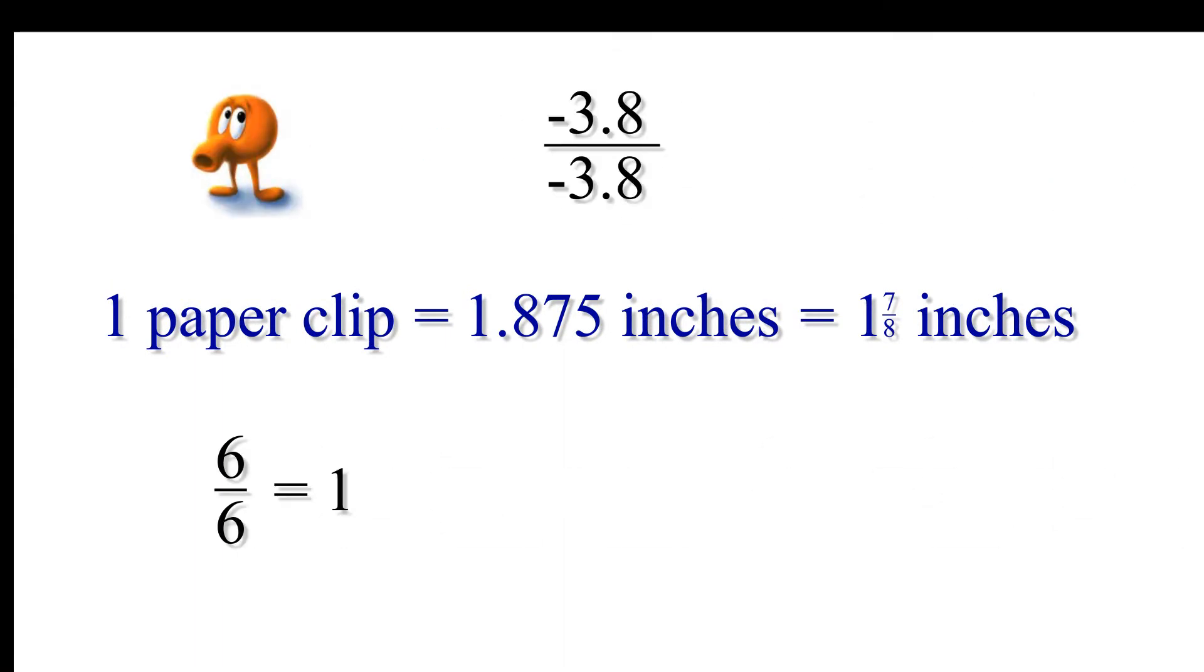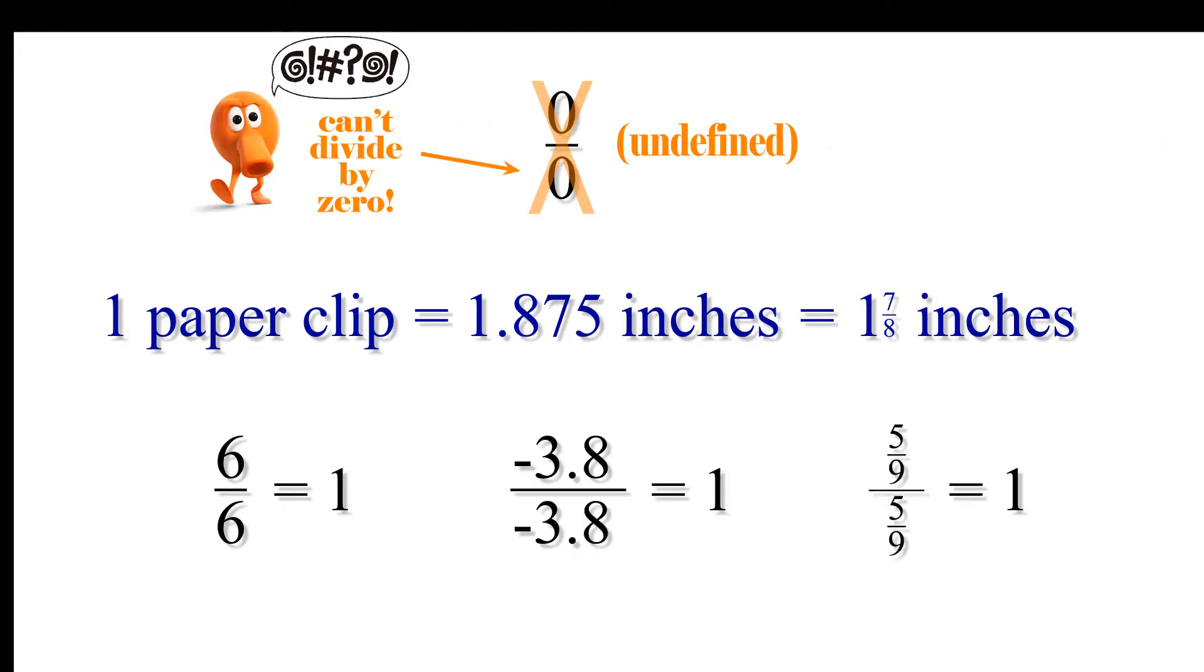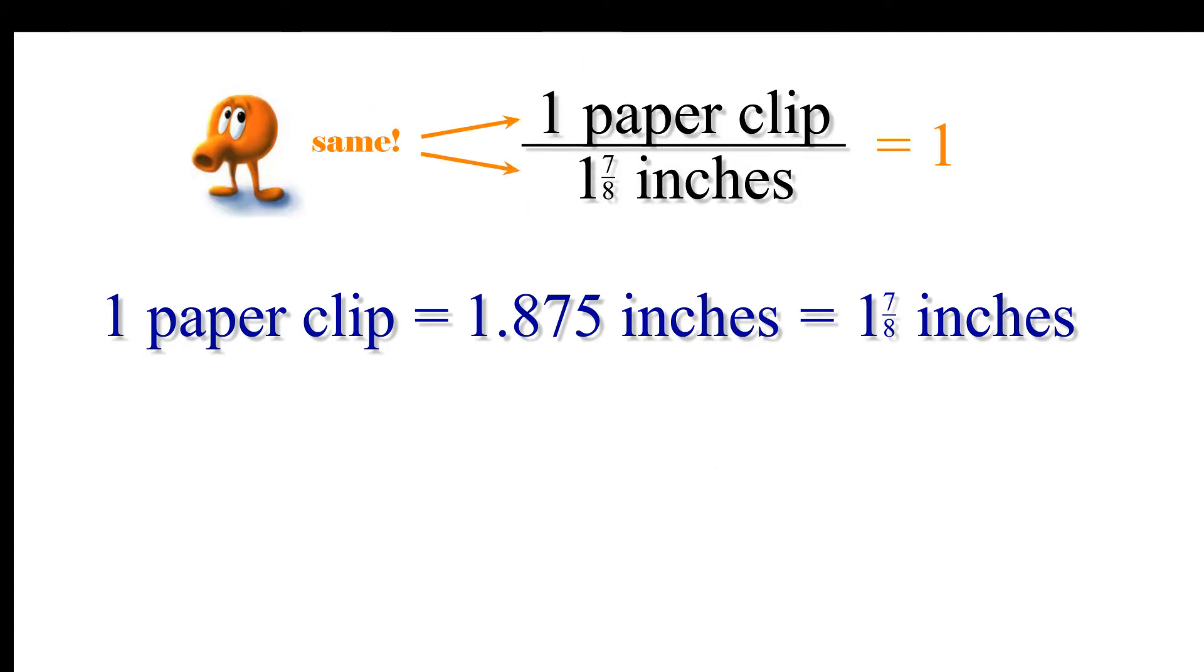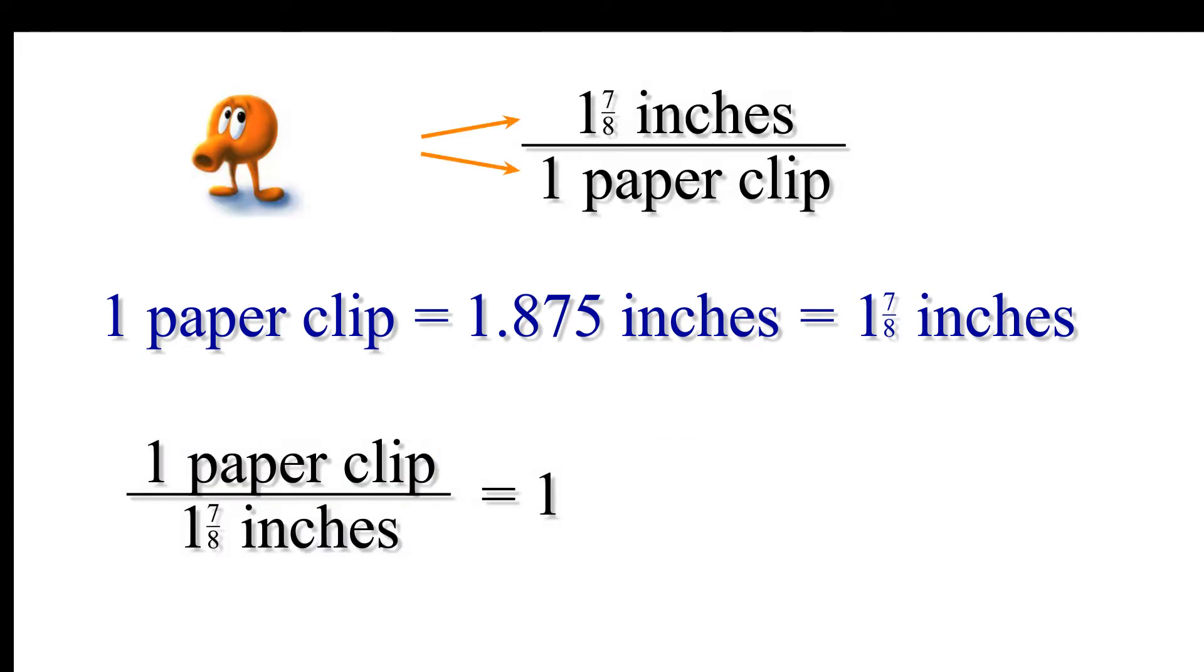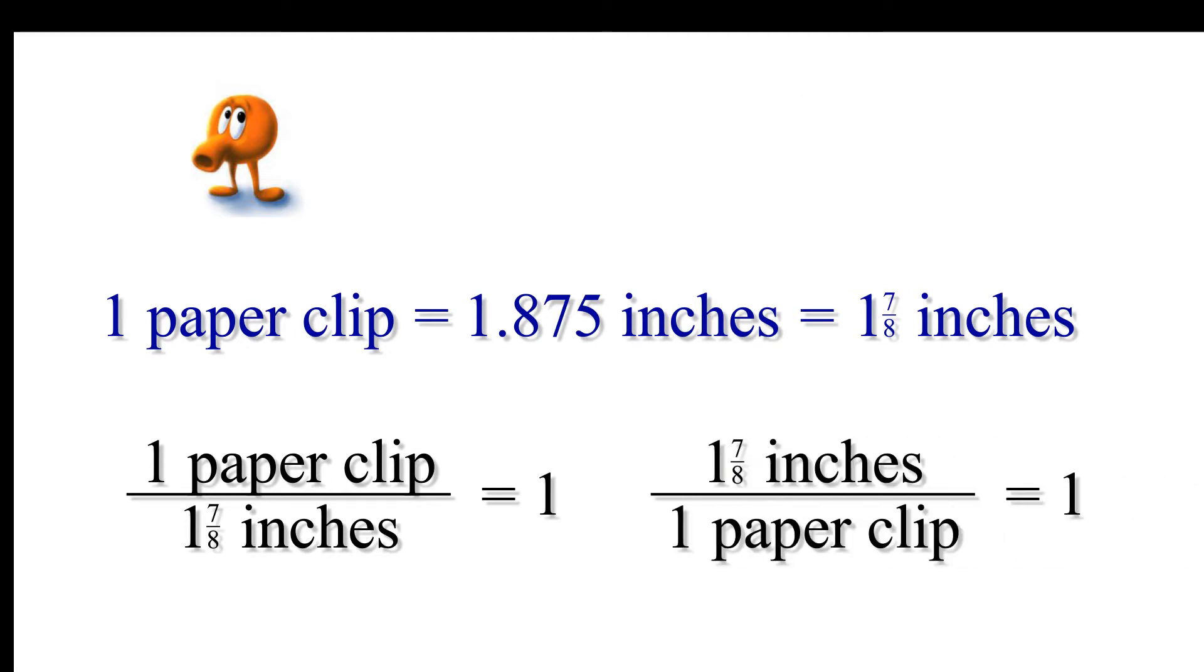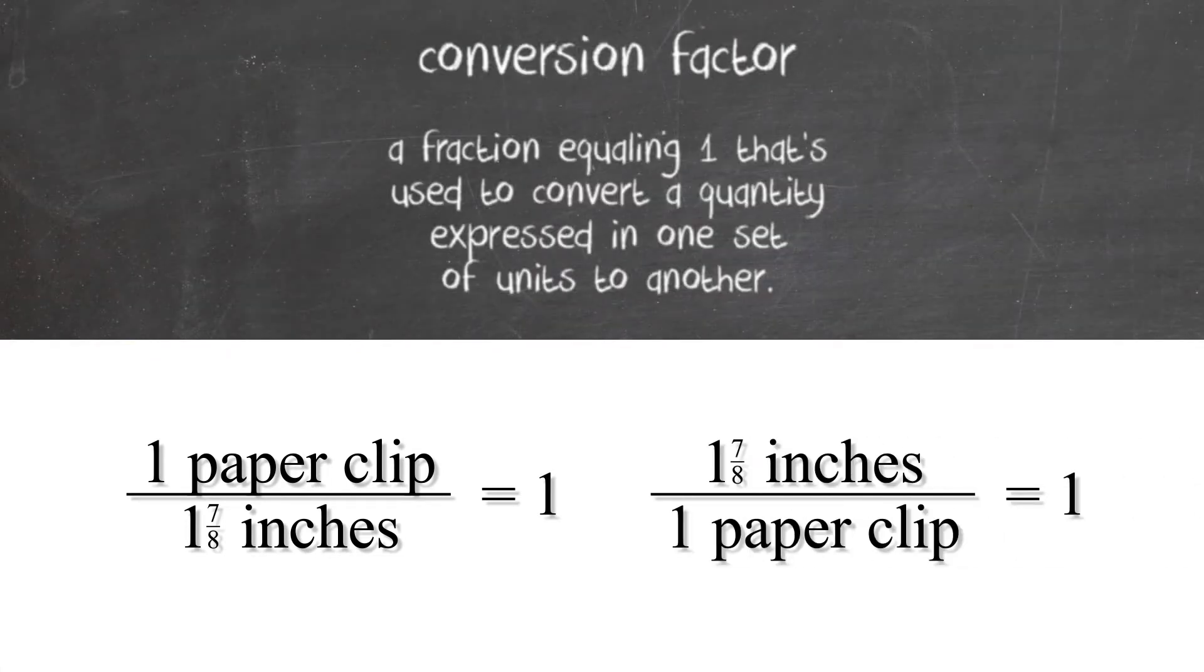Much in the same way that dividing a non-zero number by itself will always equal 1, something similar happens when you divide two non-zero quantities that represent the same amount of something. The fraction form should be thought of as having a value equaling 1. We call these types of fractions conversion factors. A conversion factor is a fraction equaling 1 that's used to convert a quantity expressed in one set of units to another.